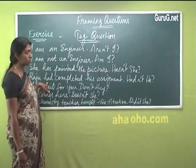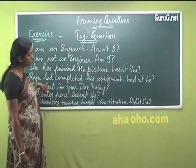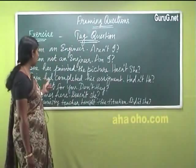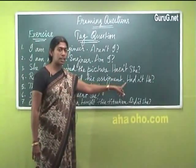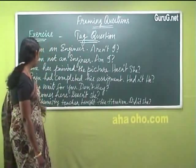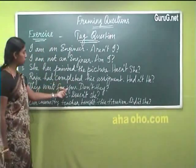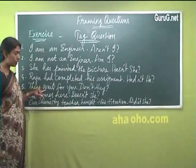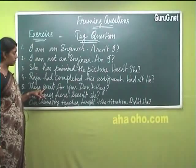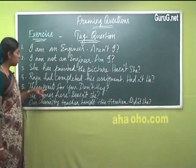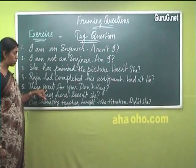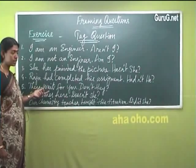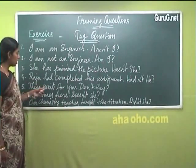'I am not an engineer, am I?' — when the sentence already contains 'not,' it is easy to use 'am' in the positive tag. 'She has painted the picture, hasn't she?' — the verb used is 'has' and the sentence is positive, so the tag must be negative. 'Has' changes to 'hasn't,' and the subject 'she' is retained. 'Raju had completed his assignment, hadn't he?' — 'had' is positive here so it becomes 'hadn't,' and 'Raju' is replaced by 'he' in the tag.